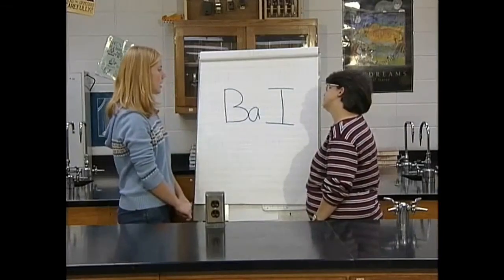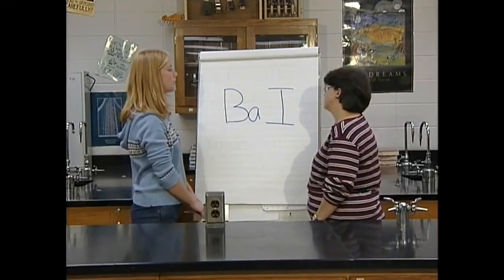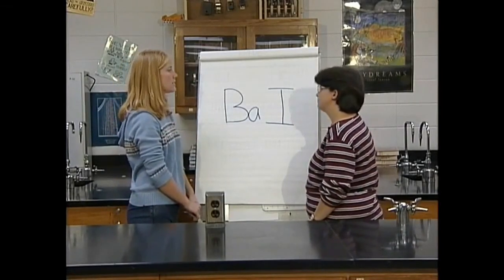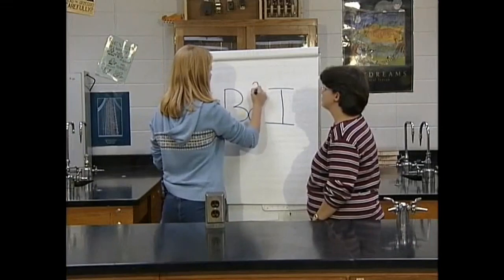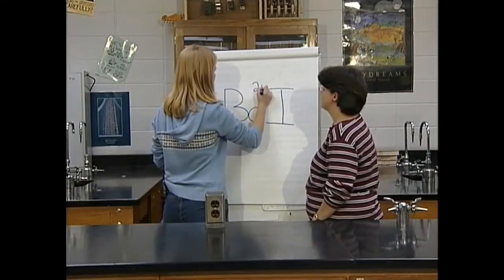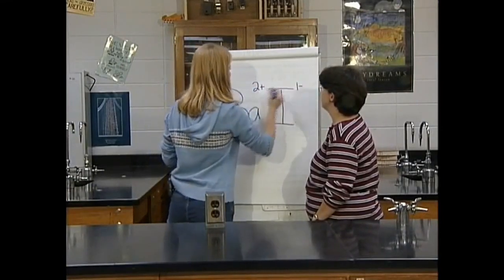Next, determine the charges. Since barium is in group 2, it has a +2 charge. Since iodine is in group 17, it has a -1 charge. Write those charges to the upper right-hand side of your symbols. Now crisscross the charges and make them the subscripts for the ions.